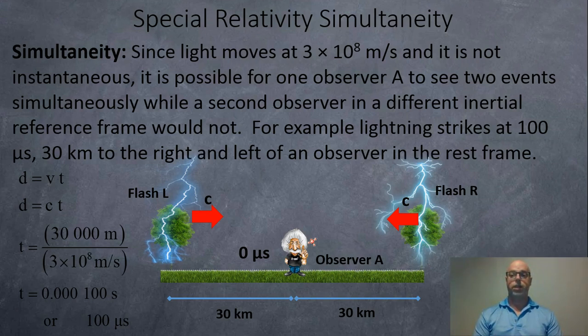For example, let's say lightning strikes at 100 microseconds or 30 kilometers to the right and left of an observer in this reference frame. If you take the 30,000 meters or 30 kilometers divided by the speed of light, 3 times 10 to the 8, it's 0.000100 or 100 microseconds.